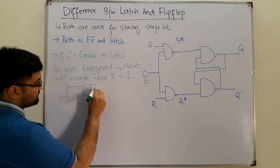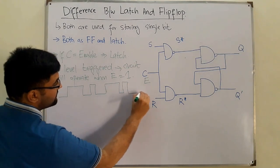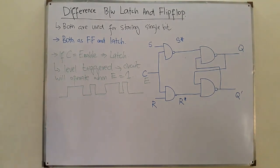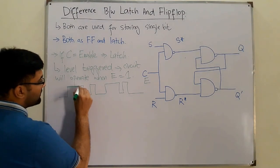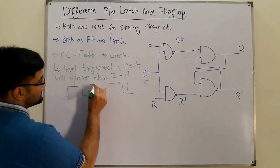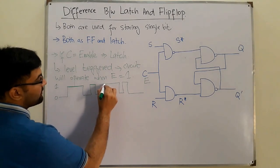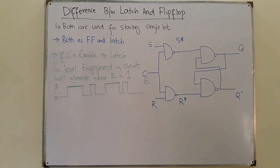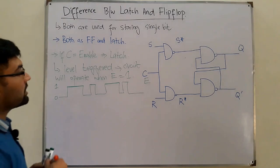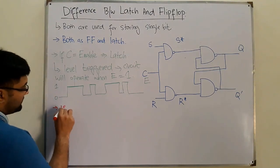If I have a random signal with some other duty cycle — not 50% — this circuit will be working whenever the enable signal is high.